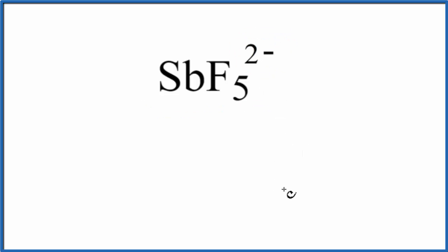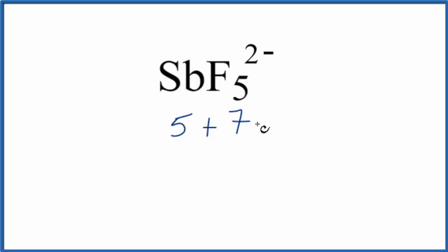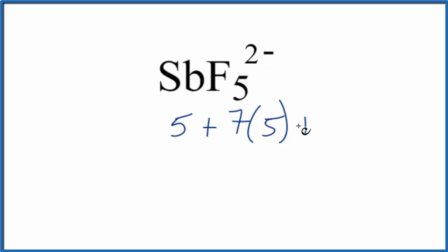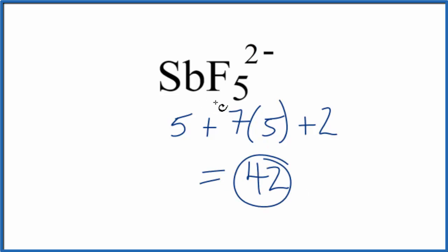The first thing we'll do is count the valence electrons so we can draw the Lewis structure. Sb is in group 15, sometimes called 5A, so it has 5 valence electrons. Fluorine is in group 17, sometimes called 7A, and it has 7. We have 5 fluorine atoms. That negative 2 charge means we have 2 additional valence electrons. Adding all this up, we get 42 total valence electrons for the SbF5 2- Lewis structure.